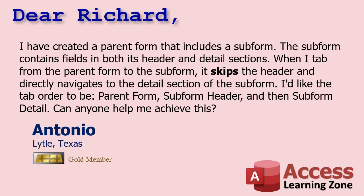This is a question I've gotten a couple of times. Today, Antonio from Lytle, Texas, one of my gold members, posted this in the forums. He said: I've created a parent form that includes a subform. When the subform contains fields in both its header and detail sections, when I tab from the parent form to the subform, it skips the header and navigates directly to the detail section of the subform. I'd like the tab order to be parent form, subform header, subform detail. Can anyone help me achieve this? Yes, I think we can. There are lots of different ways to handle this — I'm going to show you two.